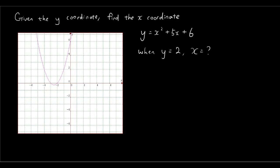Let's have a look at this graph and where y equals 2 is. This is the y axis and y is equal to 2 will be about here. So when y is equal to 2, x is equal to either negative 4 or negative 1, so there are two answers: x equals negative 4 or negative 1.